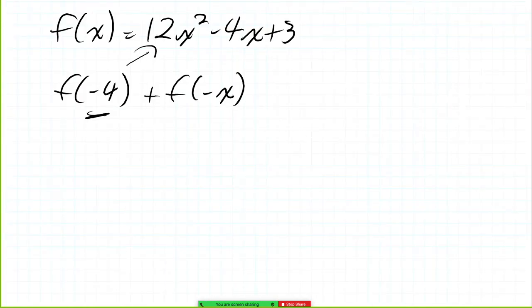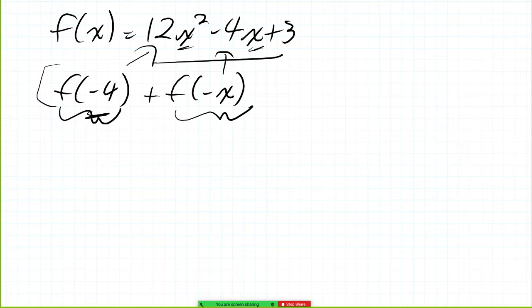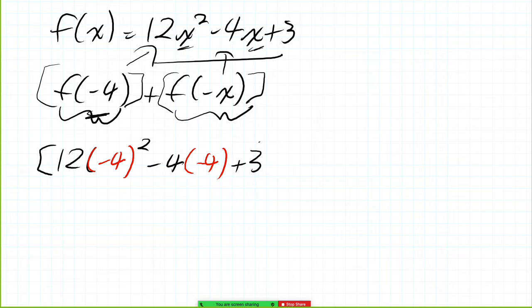This very first one, we have to write the entire equation and substitute -4 for the x values. Then in this one, we write the entire equation again, but substitute -x for the x values. So the very first part, I'm going to kind of separate them with some square brackets just to make it visually easier to follow. We get 12(-4)², that's the value we're substituting in, squared minus 4(-4) + 3. And that's our first equation we need to sort out.